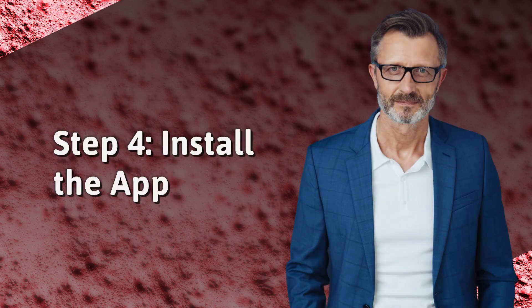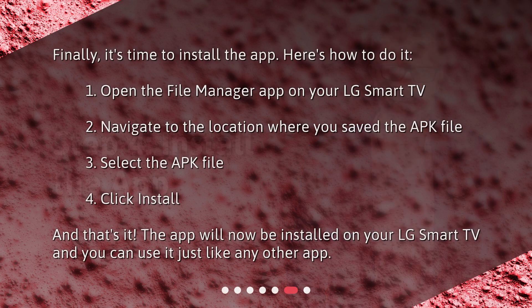Step 4: Install the app. Finally, it's time to install the app. Here's how to do it: 1. Open the File Manager app on your LG Smart TV. 2. Navigate to the location where you saved the APK file. 3. Select the APK file. 4. Click Install and that's it. The app will now be installed on your LG Smart TV and you can use it just like any other app.